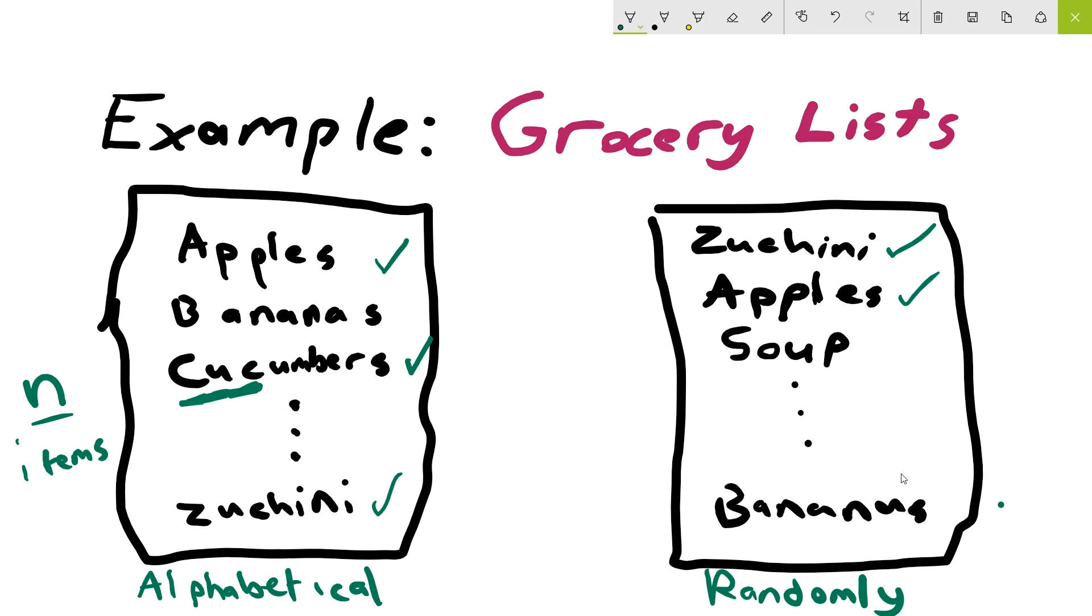On the other hand, let's imagine that we wanted to try to find the same item, cucumbers, in this randomly sorted list. To do this wouldn't be as easy as the list on the left. We would have to go through zucchini, apples, soup, and just keep going down this list until we eventually found cucumbers somewhere down here. Or maybe it was up here. We don't know. But in the worst case, we would have to go through this whole entire list because we don't know where cucumbers would fall. Because there's no order to how this list is sorted. So in this case, we could say that it is upper bounded by n. So it is O, again, is upper bounded. And n is because we have to look through all n items in the worst case to find cucumbers.